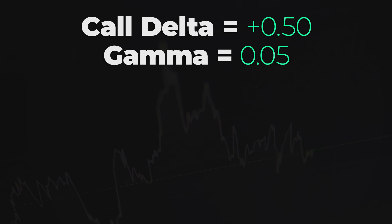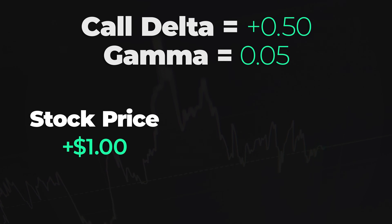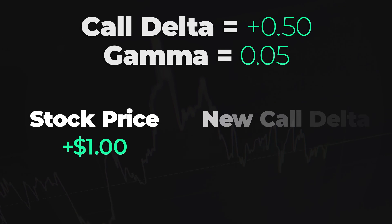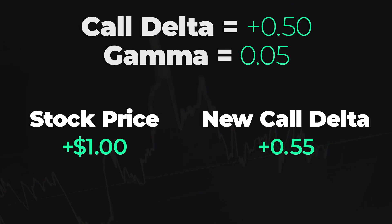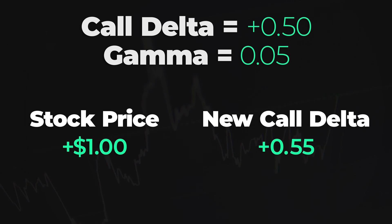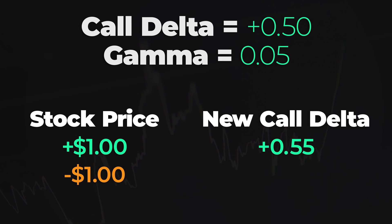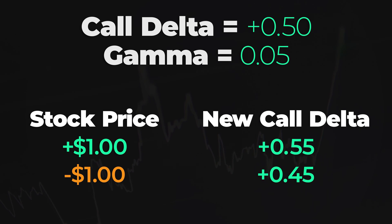Consider a call with a Delta of 0.5 and a Gamma of 0.05. If the stock price increases by $1, the call's Delta would become positive 0.55. Conversely, if the stock price drops by $1, the Delta would decrease to positive 0.45.